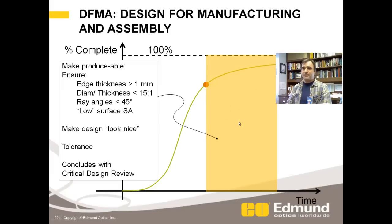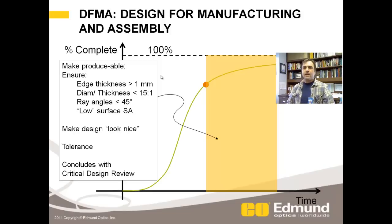So then you spend some time — that's this yellow area here — where you're making the design producible and beautiful. One of my lens design mentors, Dick Buckroeder, used to say that a good lens design looks pretty, meaning low ray angles of incidence and lenses that look manufacturable. You're going to have some thickness to your edges, it's not going to come to a point. Your diameter-to-thickness ratios are going to be less than 15 to 1. You'll try to get low ray angles of incidence and low surface-induced spherical aberration. Then you go ahead and tolerance this design, concluding this design-for-manufacturing-and-assembly phase with a critical design review.